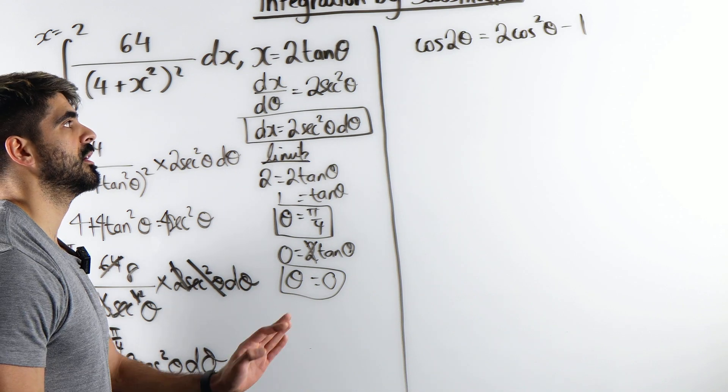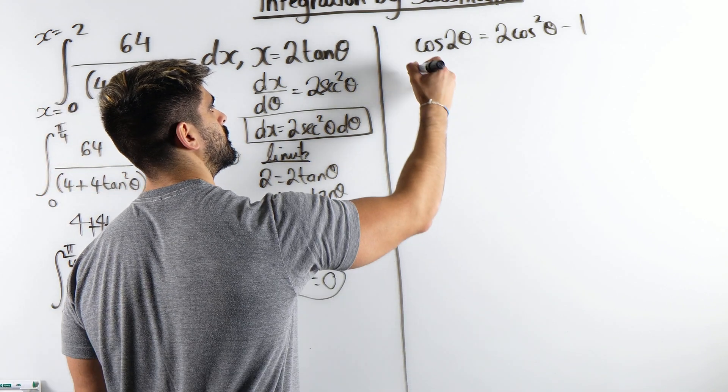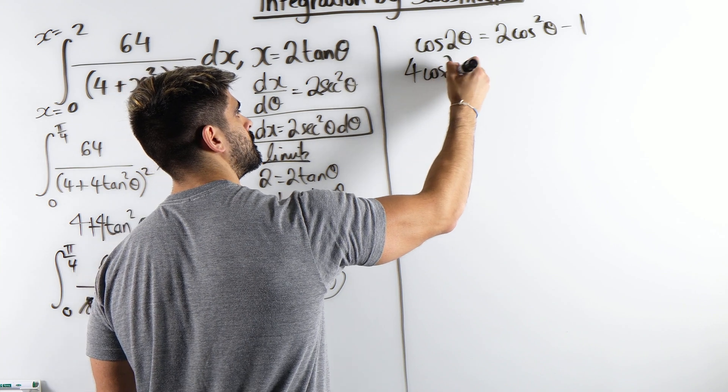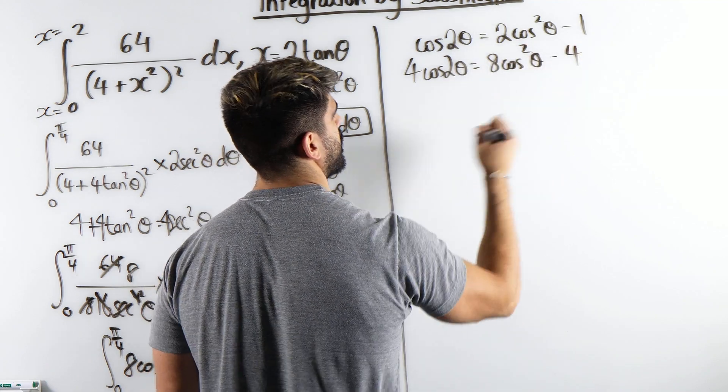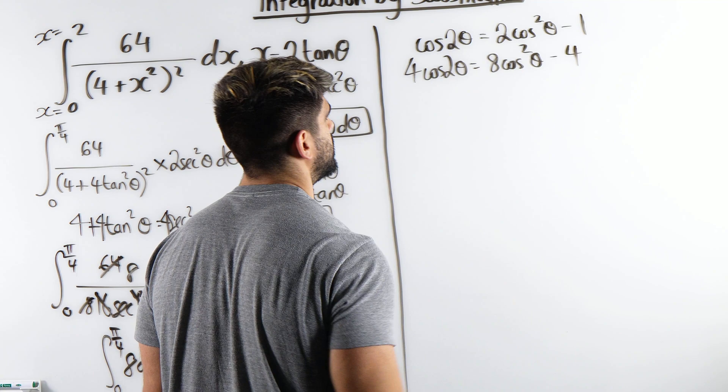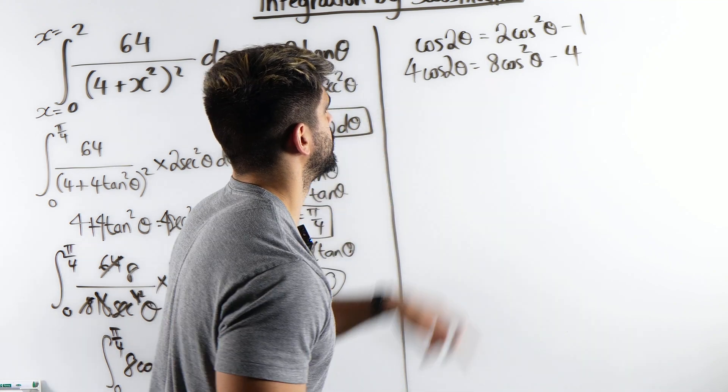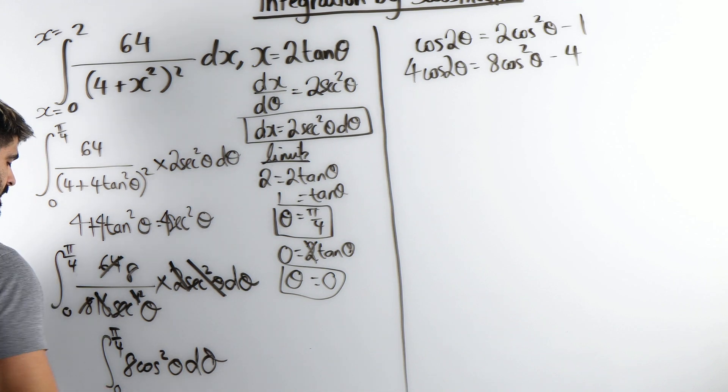So we can times through by 4. 8 minus, times through by 4. So we're going to add the 4 over. Add the 4 over and that's going to be my integral.